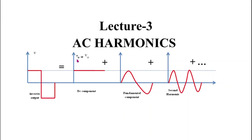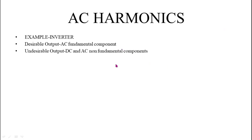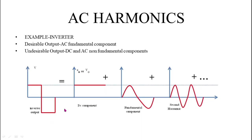Welcome to this YouTube channel. Today we are going to study AC harmonic analysis. To understand this topic, we will take an example of a device whose output is AC — an inverter. The input of an inverter is DC while the output is AC. The desirable output of an inverter is the fundamental component of a sine wave, while DC components and high-order harmonics are non-desirable. The output waveform of a rectangular inverter circuit is clearly non-sinusoidal.